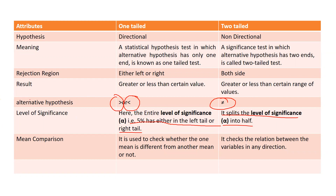For mean comparison: a one-tailed test is used to check whether one mean is different from another in a specific direction. A two-tailed test checks the relationship between variables in any direction.